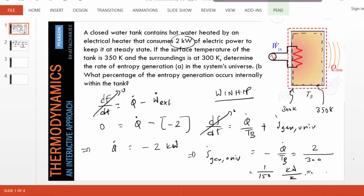Which in decimals is about 0.0067 kilowatts per Kelvin.